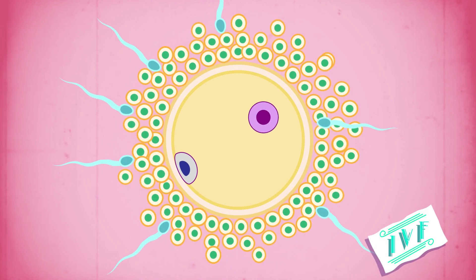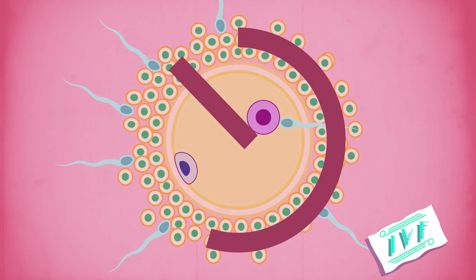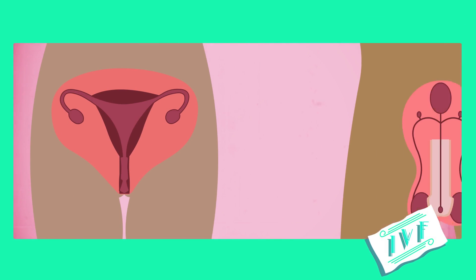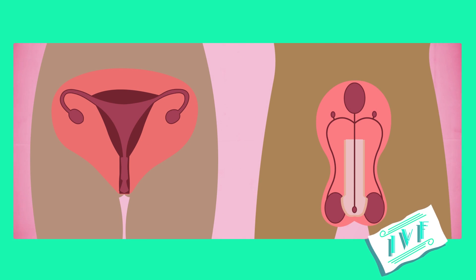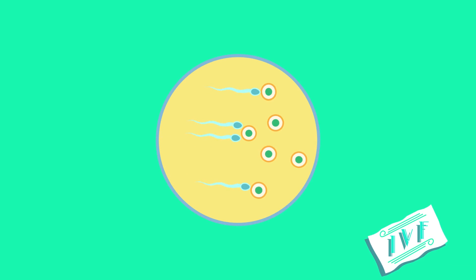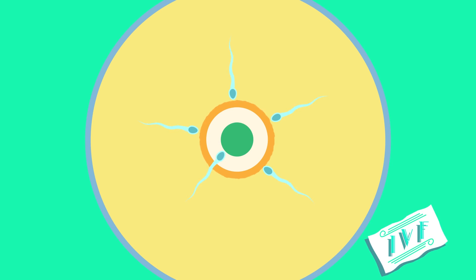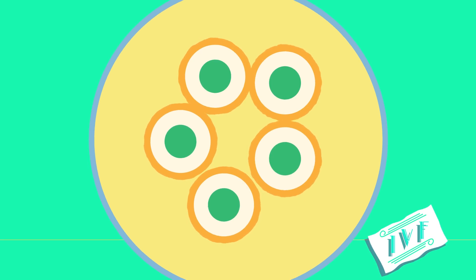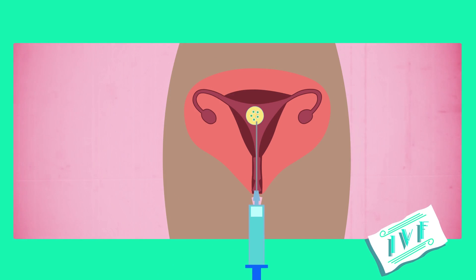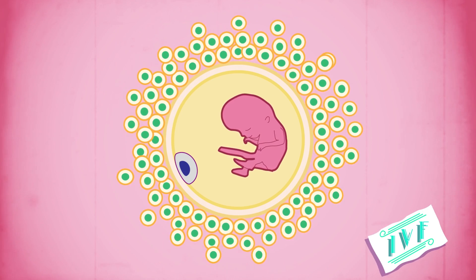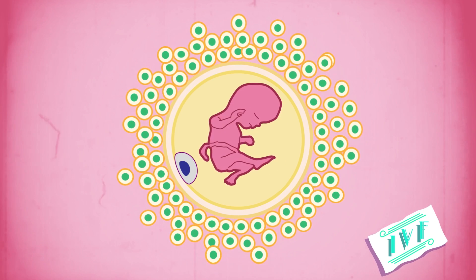IVF can be used when natural fertilization inside the body cannot occur. This is often due to the reproductive parts of the mother or the father not working properly. In IVF, an egg is removed from a woman. Outside the body, sperm is introduced to the egg and fertilizes it. The fertilized egg develops to form an embryo, and the embryo is then returned to the woman's uterus, where the fetus develops as normal.